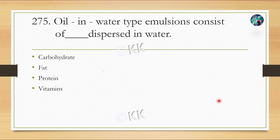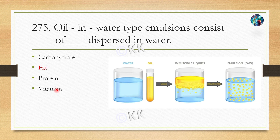Oil in water type emulsion consists of what dispersed in water? Option A, Carbohydrate; option B, Fat; option C, Protein; option D, Vitamin. This is a straightforward question because carbohydrates and proteins dissolve in water, and vitamins B and C are also water soluble. So the correct answer is option B — Fat. As seen in the image, mixing oil and water creates an immiscible liquid.